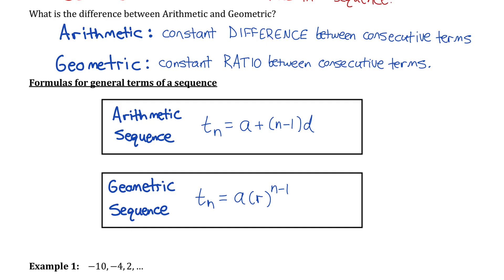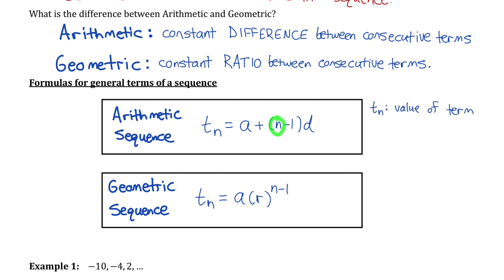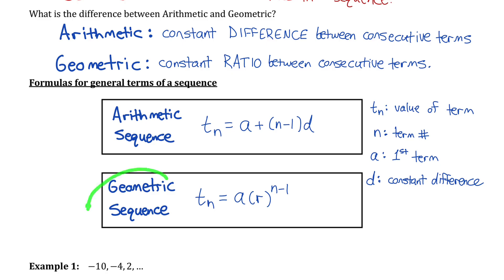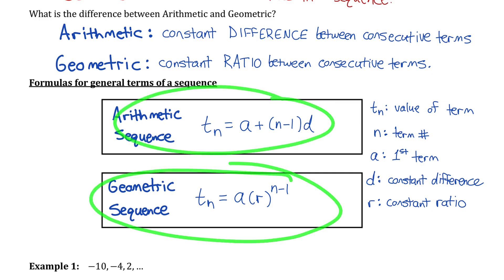Just so you remember, here's what each parameter stands for. Tn is the value of any one term in the sequence, whereas n represents the term number — not its actual value, but its position in the list. a stands for the first term in the sequence, d is the constant difference and applies only to arithmetic sequences, and r stands for the constant ratio, which only applies to geometric sequences.